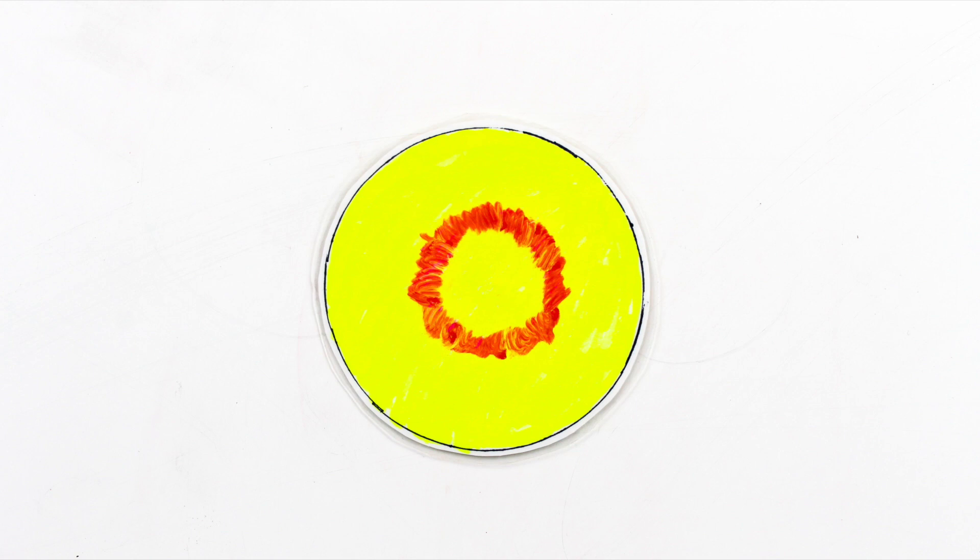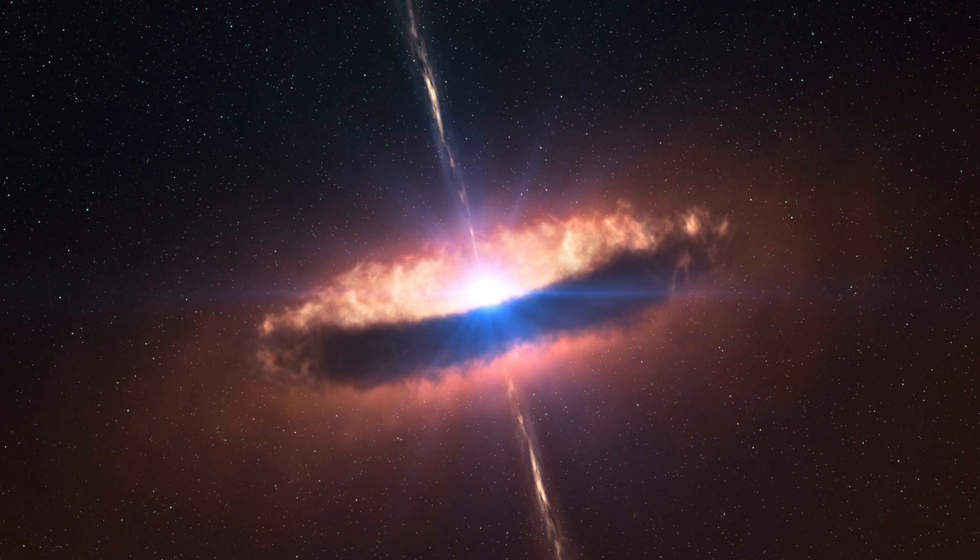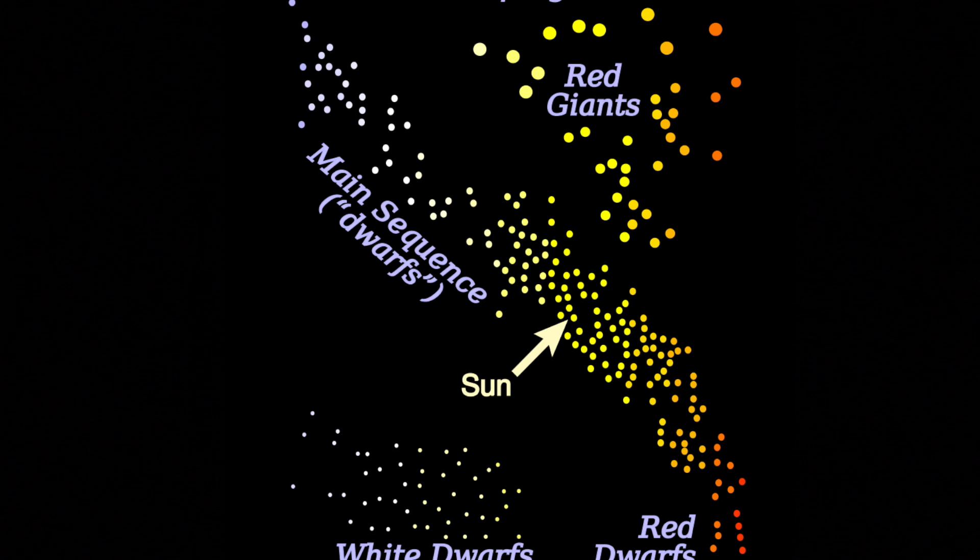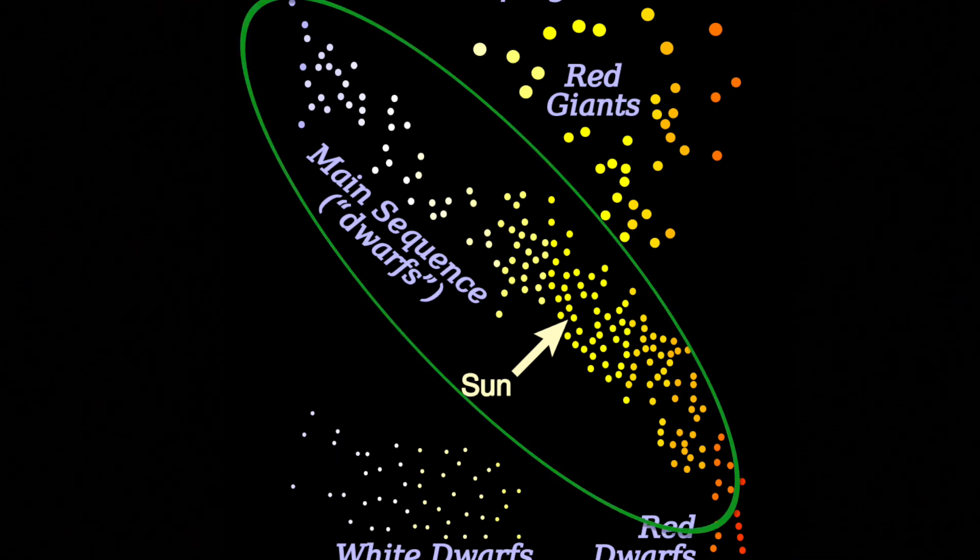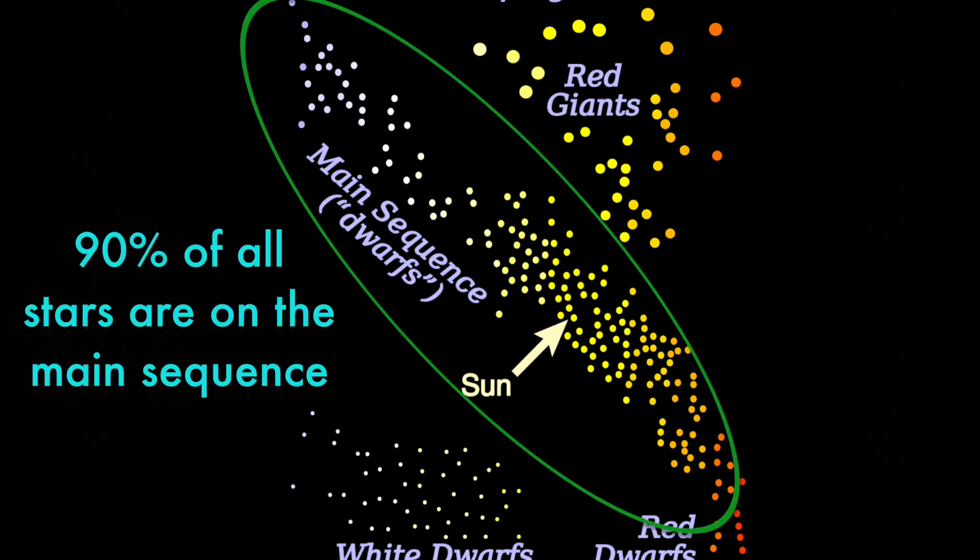This time, we're going to talk about what happens next. When a protostar finally begins fusion, it becomes a star. It then joins a class of stars known as the main sequence, which makes up about 90% of all stars in the universe.